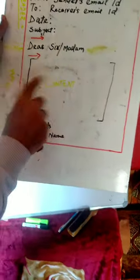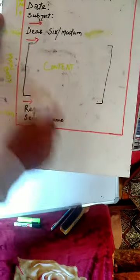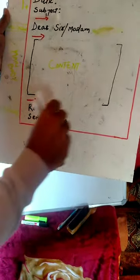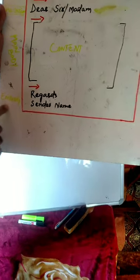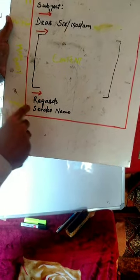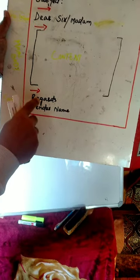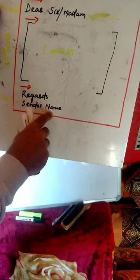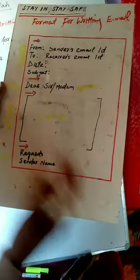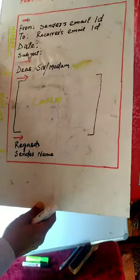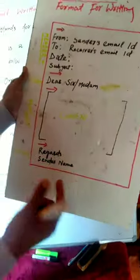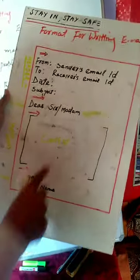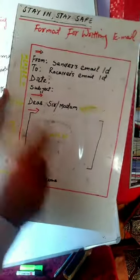After the content of the main body, keep one line blank again. After that comes the ending — that is the fourth part. This completes the format for writing an email.